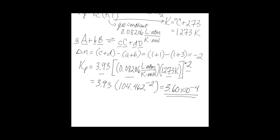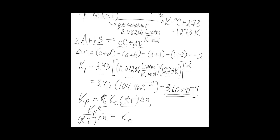If you have to go the other way — if you need to find Kc knowing Kp — you just rearrange the equation. You divide both sides by RT raised to the delta N, so Kc equals Kp divided by RT raised to the delta N. If you know Kp, substitute it in along with R, T, and delta N, and then solve for Kc. So this is how you solve for Kc knowing Kp, and I also showed you how to solve for Kp if you know Kc. That's it.